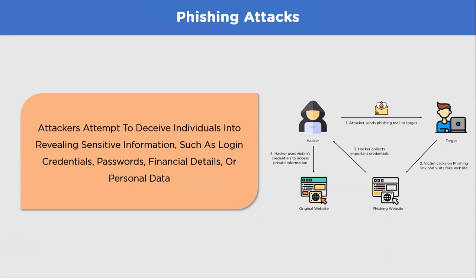Second on the list, we have phishing attacks. Phishing attacks are social engineering techniques used by cyber criminals to trick individuals into revealing sensitive information such as login credentials, financial details, or personal data. Phishing emails often appear to be from reputable sources including banks, social media platforms, or government agencies. They create a sense of urgency or fear to prompt immediate action. Make sure you do not click on emails from unreputable or unrestricted sources.